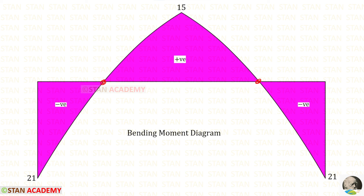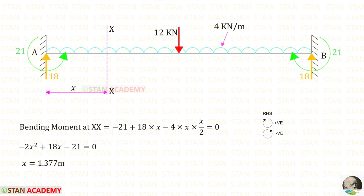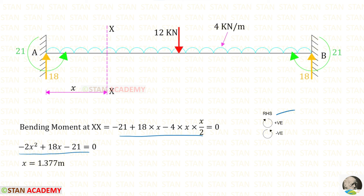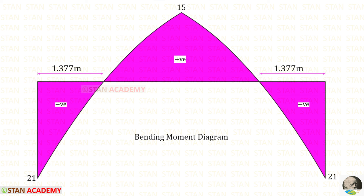We can find the location of these two zero-crossing points. Since the diagram is symmetrical, both locations are the same. Taking a section XX at distance x, setting the bending moment to zero using the right-hand side rule gives an equation, and solving with a calculator gives x = 1.377 meters. We have now found both locations where the bending moment becomes zero. Thank you for watching this video.